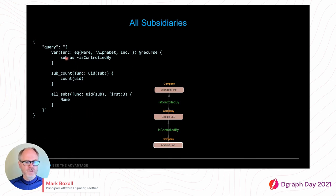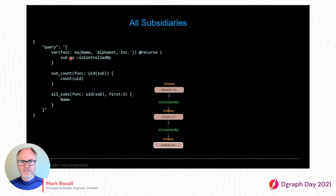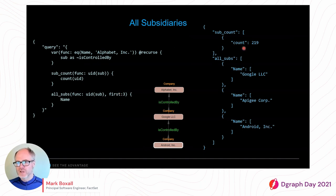The first query block is a var, which just means it's not going to return any data. We're matching on the name 'Alphabet Inc.' and we want to recursively follow the 'is controlled by' edge in the reverse direction — the tilde denotes a reverse edge — to find all subsidiaries and subs of subs, basically expanding the entire corporate tree of Alphabet Inc. We store all these companies in the 'sub' variable, then pull out the UIDs, count them, and list out the names of the first three subsidiaries. We have 219 total subsidiaries.